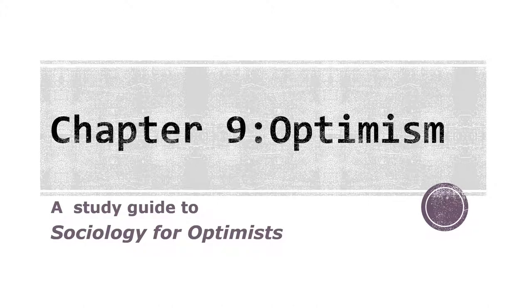This is a study guide for Chapter 9 of Sociology for Optimists by Mary Holmes, published in 2015, called 'Check Optimism.' Please note that these study guides are meant to point out some important concepts of interest to introductory students. These are not designed to be thorough or provide an in-depth discussion. Material will be skipped or barely discussed, while other concepts will be given more emphasis than the chapter may have given them. The purpose of this book is to look at the ways in which sociology can provide a basis for optimism, so discussions of pessimism and optimism will be central to this guide.